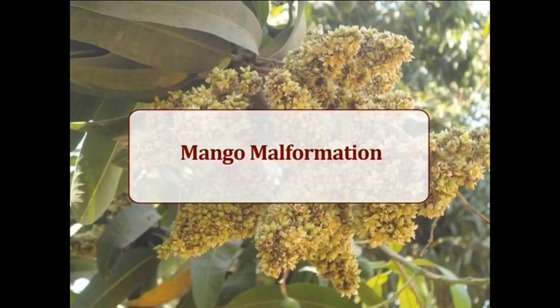Mango Malformation. The symptom appears as excessive vegetative branches of limited growth, swollen and with short internodes, giving a rosette-like appearance due to abnormal growth. Some light-type panicles which are compact bear no fruits.